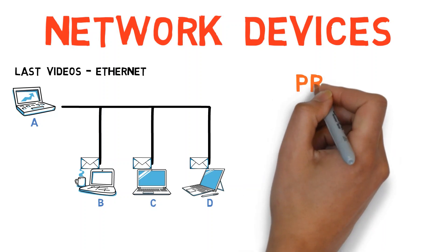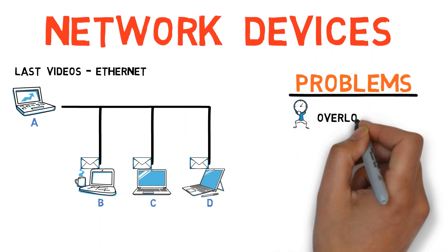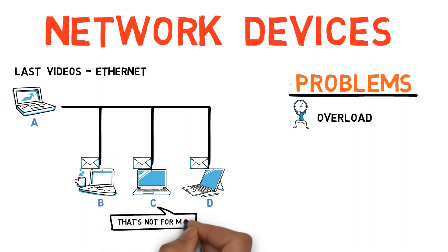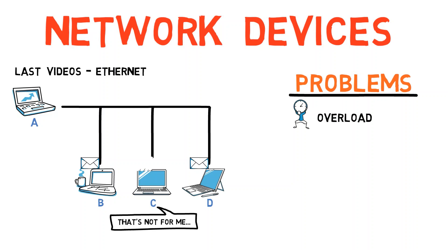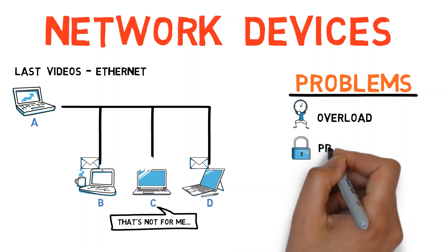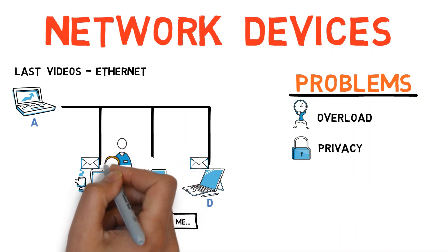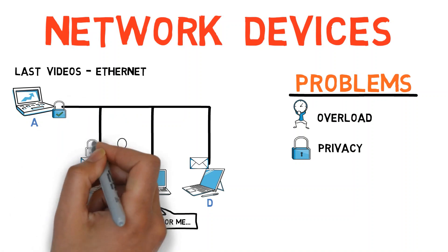Can you think of some problems with this network structure? First, overload. All network frames are received by all computers. Let's say A wants to send a frame to B. C also sees this frame and has to realize that it is not destined to his address, and thus C has to discard the frame. This process takes time and resources. Second, privacy. If C sees every message sent from A to B and vice versa, this means that the privacy is violated. We would rather have a network where only A and B see the messages sent between them.